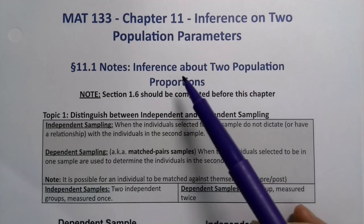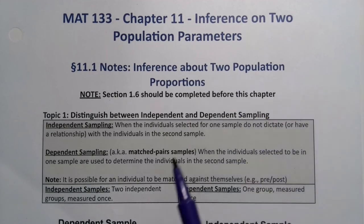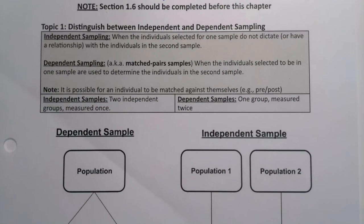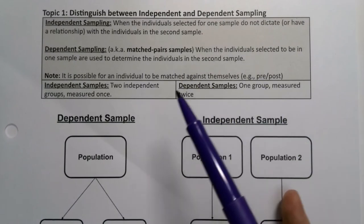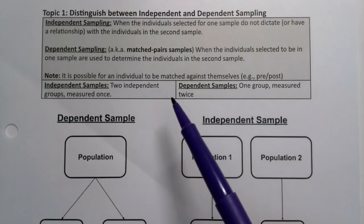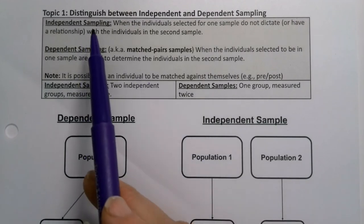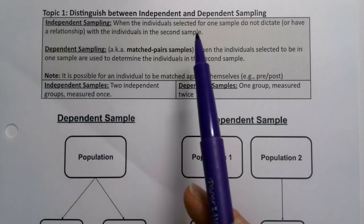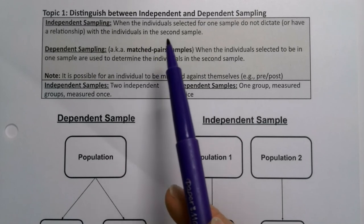Before we get into inference about two population proportions, we need to be able to distinguish between the types of sampling that we're doing, because that will dictate what type of hypothesis test or confidence interval we can make. There are two types of sampling we're going to look at. There's independent sampling, when the individuals selected for one sample do not have any relationship with the individuals in the second sample.